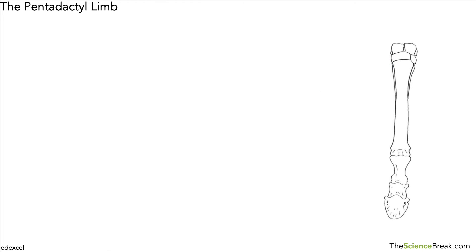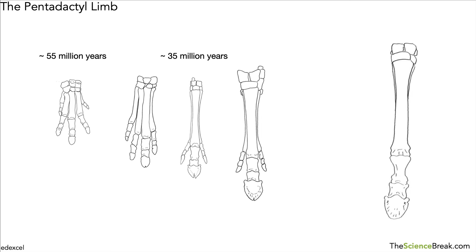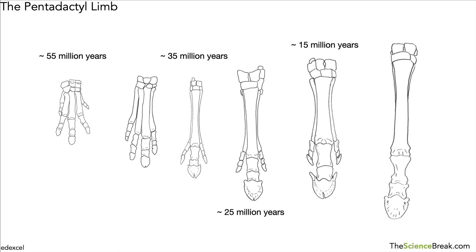Now if we look at a horse and its front limb, you might think it doesn't seem to follow the pentadactyl limb structure at all. However, if we look back at the fossil record, about 55 million years ago the ancestor of the horse did have the five-digit structure. Later fossils show the evolution of the hoof — some digits are reduced in size while the one in the middle increases and becomes thicker, allowing the horse to adapt to its environment. So even the horse has pentadactyl limbs.